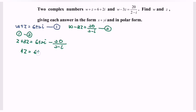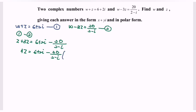So we have 4z equals 6 plus 2i minus 20 over (2 minus i). Since the question asks us to express things in x plus yi form, I suggest we focus on rationalizing the denominator of 20 over (2 minus i) by multiplying with its conjugate (2 plus i).